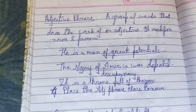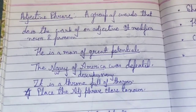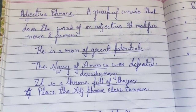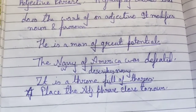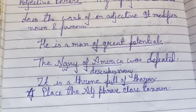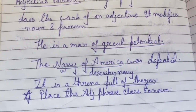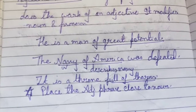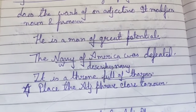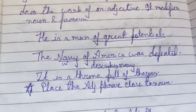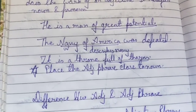Now let's proceed to the adjective phrase. An adjective phrase is a group of words that does the work of an adjective — it modifies a noun or pronoun. For example: 'He is a man of great potential' — here 'of great potential' is an adjective phrase that qualifies the noun 'man.' Another example: 'The Navy of America was defeated' — 'of America' is an adjective phrase that qualifies the noun 'Navy.'